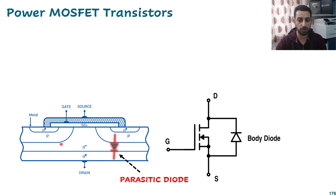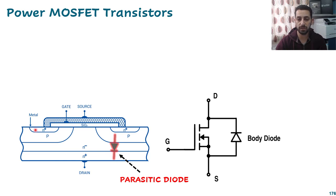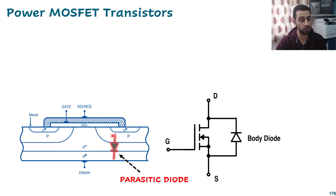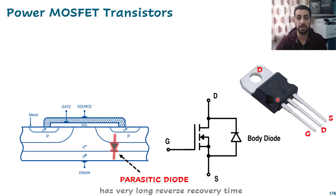There is also an NPN structure inside the MOSFET, which would form a transistor. However, that transistor has been cancelled by shorting that PN junction with a metal contact. What remains is the PN junction — the power diode. This picture shows the terminals of an example MOSFET: gate, drain, and source, along with the metal body contact which is also part of the drain terminal.